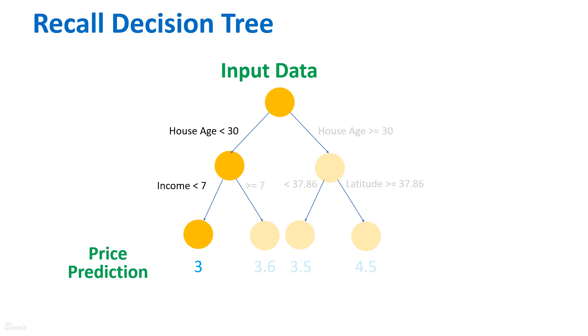If yes, how about if the income is smaller than 7? If yes, then the house price prediction is 3 million. This is essentially how a decision tree works. It makes predictions by checking the path of feature values.